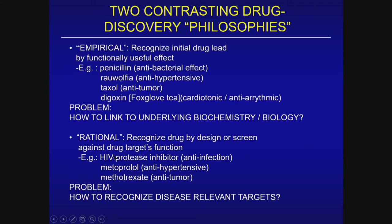Examples of successful rational approaches include the emergence of HIV protease inhibitors, where the initial target was defined relatively late in the last century, and within a short period of time changed the landscape in that disease. Methotrexate emerged from a very considered understanding of the importance of folates in cellular metabolism, and was certainly a rationally derived drug candidate against cancer. How to recognize the most disease-relevant targets is the key aspect in designing a screening program.